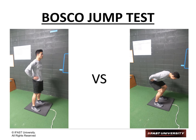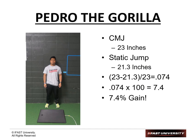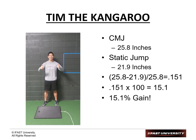For the static jump, I want them in a comfortable bottom squat position and jumping straight up — if I see any dip in the hips, they've cheated the test by using the stretch shortening cycle. Pedro's counter movement jump versus static jump showed only a 7.4% gain from his stretch shortening cycle, versus Tim who had a 15.1% gain. That's a big difference and confirms we have a gorilla and a kangaroo.